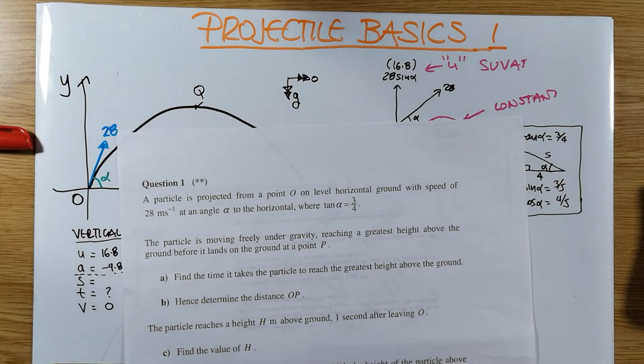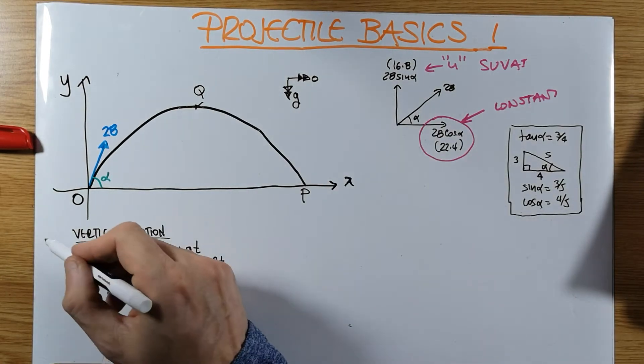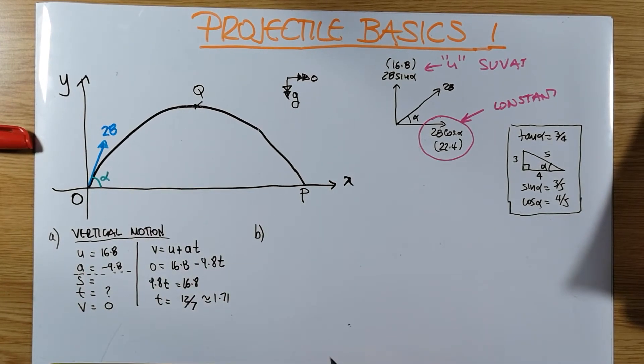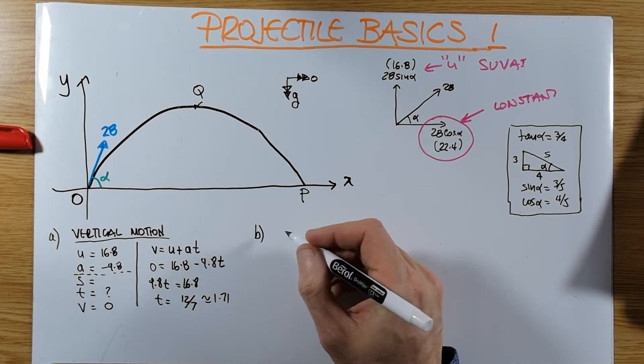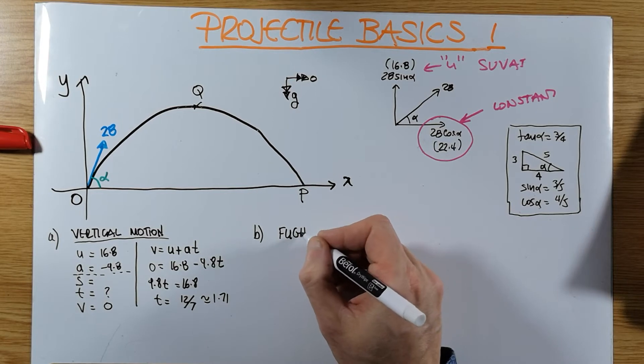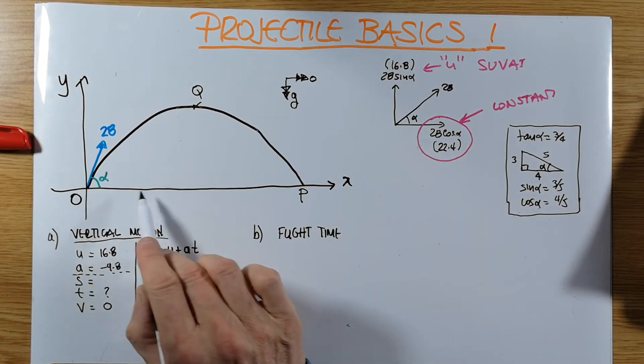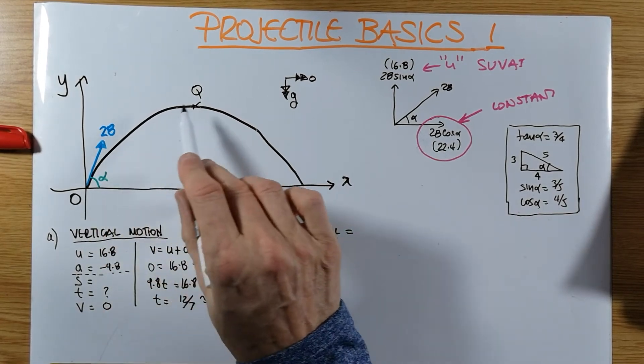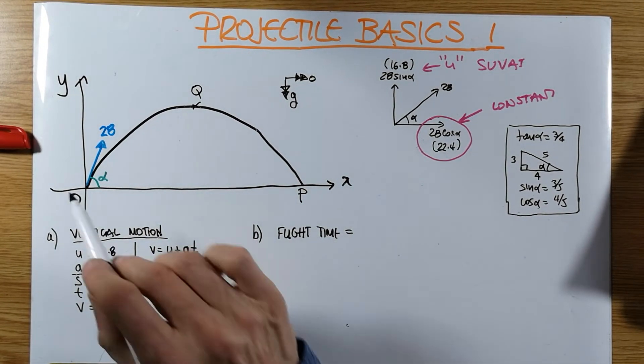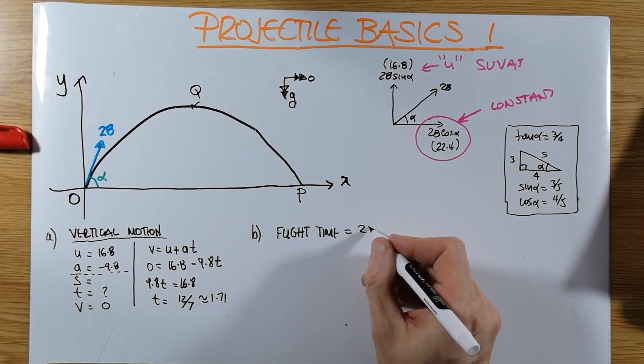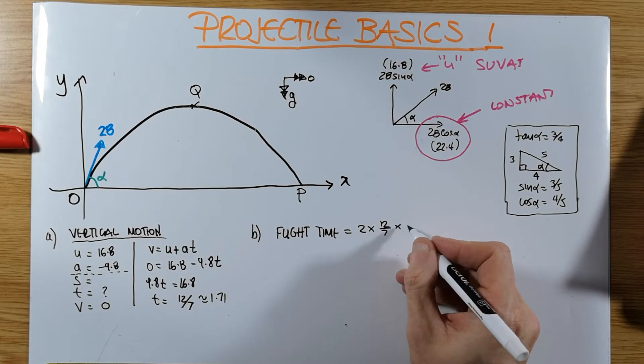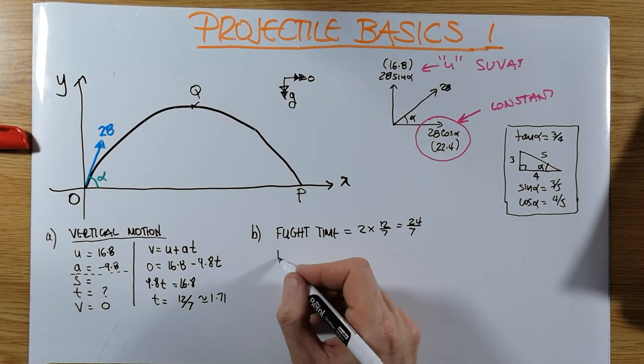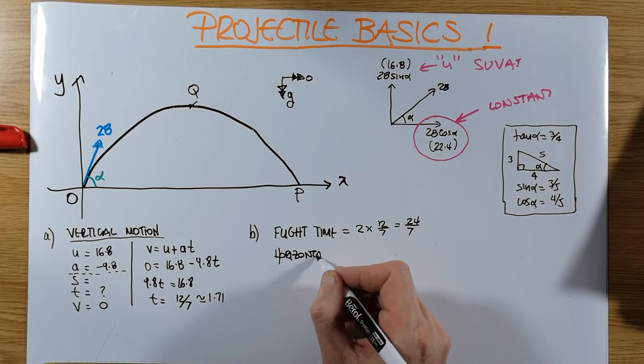Hence, determine the distance O to P. So that's the part B now. Determine the distance from O to P, the horizontal distance. So now we have to think horizontally. First of all, how long does it take to travel from O to P? Well, the flight time - this motion is symmetrical if it's ground to ground. So if it takes 12 over 7 to get from here to Q, it will take twice as long to cover the entire journey. Is equal to 24 over 7.